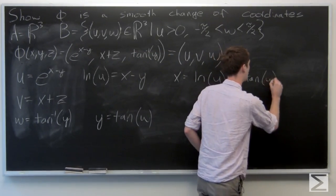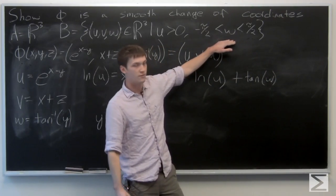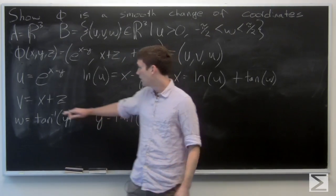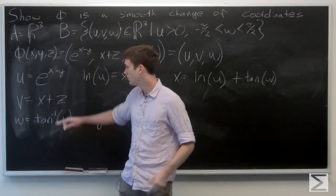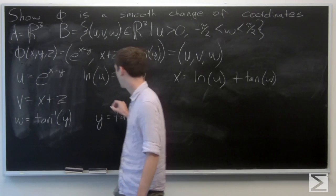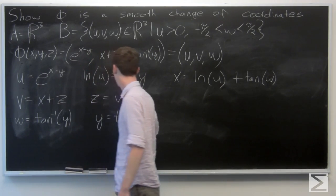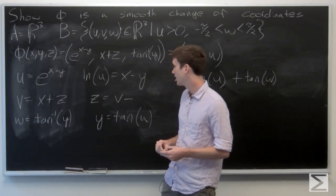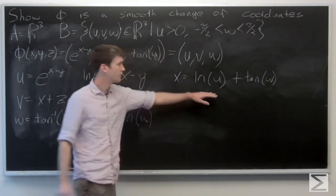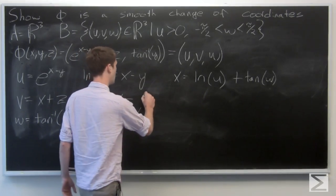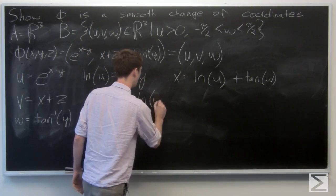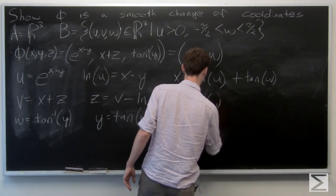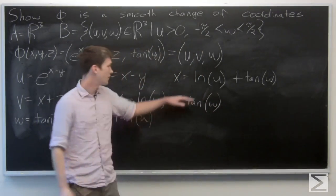Our u is defined in our codomain as being positive, so our natural log function is fine. And w is defined between negative pi halves and pi halves, so our tangent function is fine as well. Now we solve for z: we know what x is, so z is equal to v minus x, and x is the natural log of u plus tangent of w.